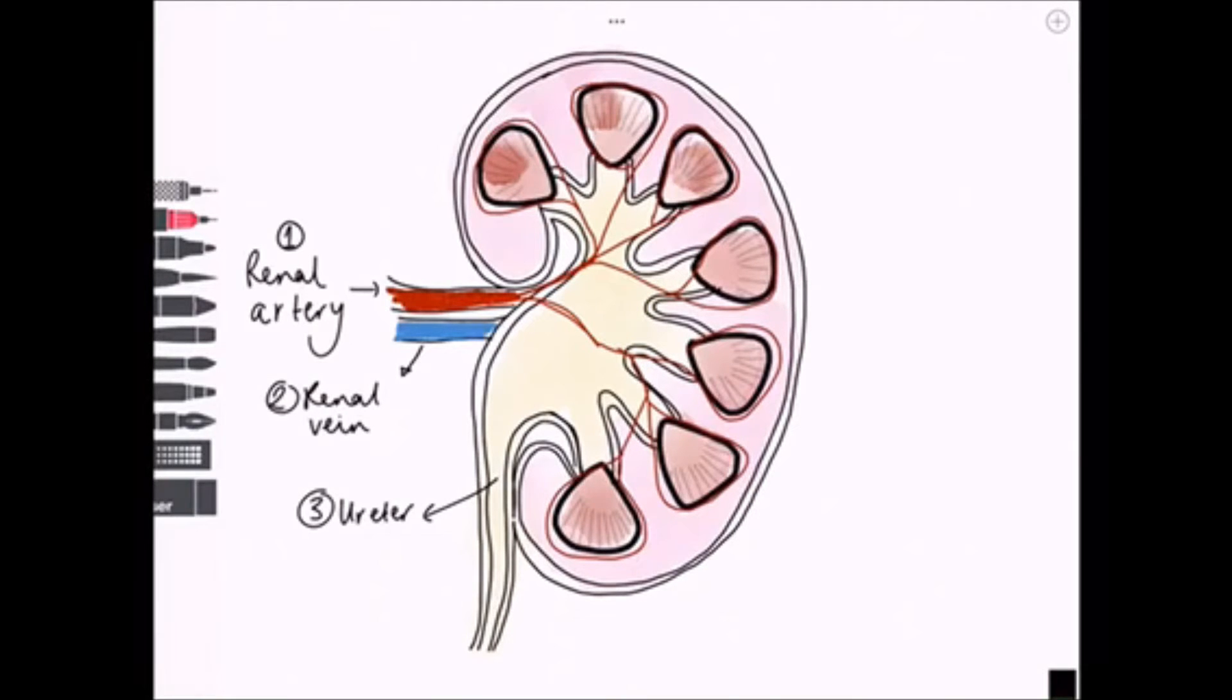From here, the renal artery divides into five segmental branches. These segmental arteries are end arteries, meaning there's no effective anastomosis between them.